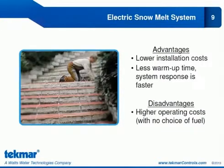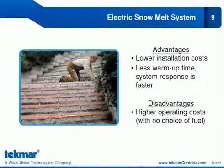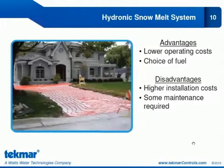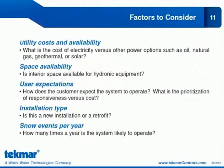The advantages of having an electric snow melt system include a lower installation cost and a reduced warm-up time, meaning you'll have a faster system response. The disadvantage of an electric snow melt system is that you have no choice of fuel — you are stuck with your electrical utility and are very susceptible to changing rates. The advantages of a hydronic system are that you have your choice of fuel, including alternative methods such as a high efficiency boiler, solar, or geothermal, which lowers your operating costs. The disadvantage of a hydronic system is a higher installation cost and potential maintenance requirements.